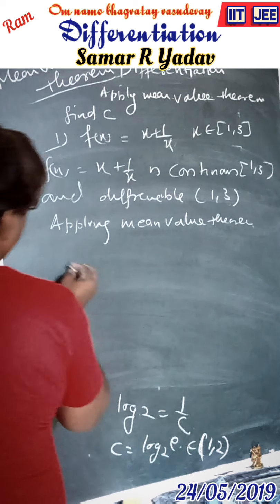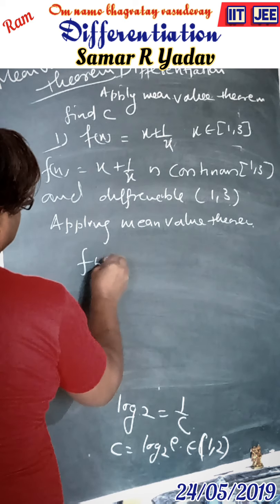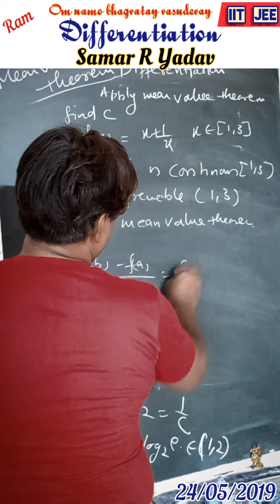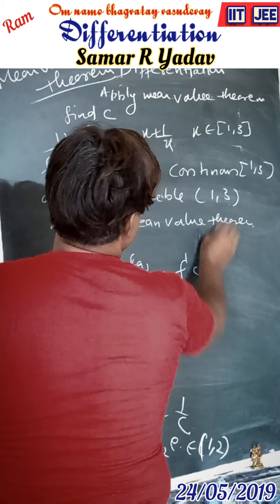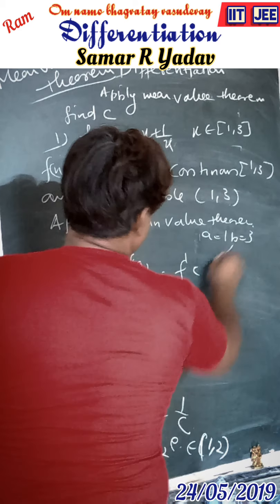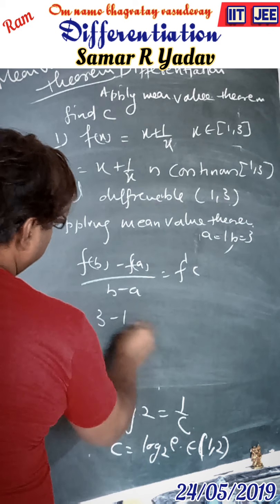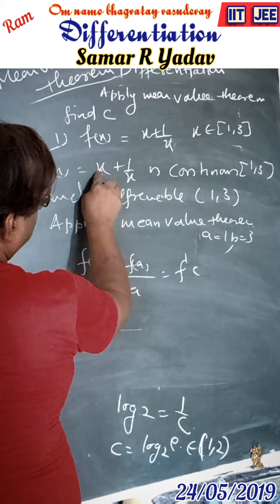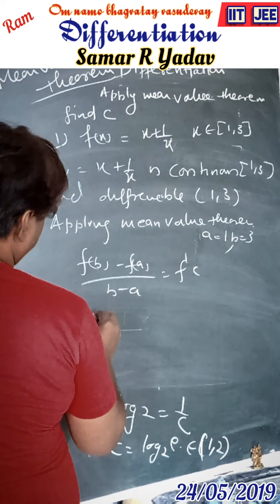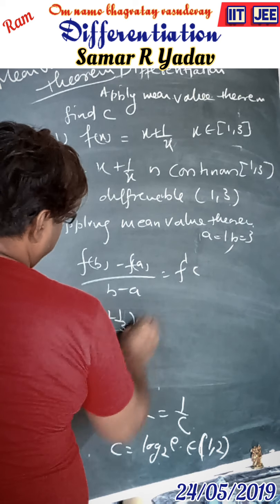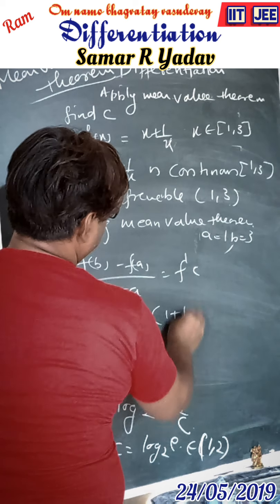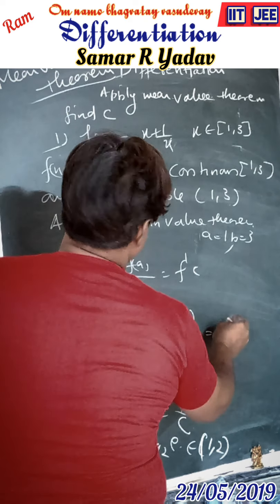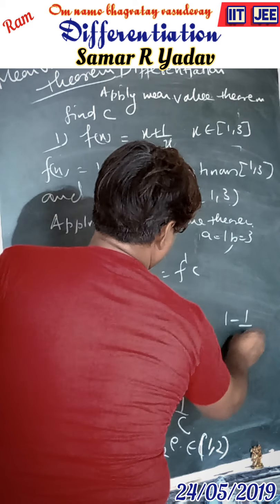Applying the Mean-Value Theorem, we get f'(c) = [f(b) - f(a)] / (b - a). With a = 1 and b = 3, we substitute: (3 + 1/3) - (1 + 1/1) divided by (3 - 1) equals 1 - 1/c².